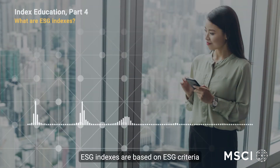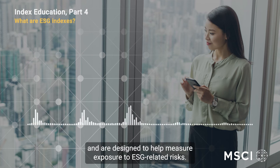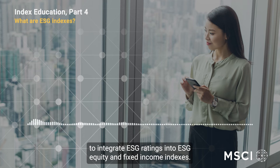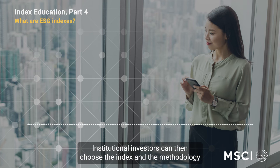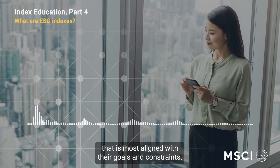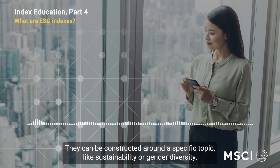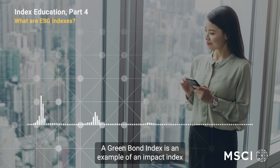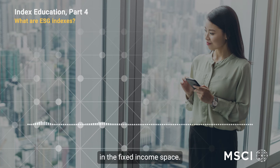ESG indexes are based on ESG criteria and are designed to help measure exposure to ESG-related risks. Index providers may select from a wide range of techniques to integrate ESG ratings into ESG equity and fixed income indexes. Institutional investors can then choose the index and the methodology that is most aligned with their goals and constraints. They can be constructed around a specific topic like sustainability or gender diversity, and the securities that show greater exposure to that topic can be included in the index. A green bond index is an example of an impact index in the fixed income space.